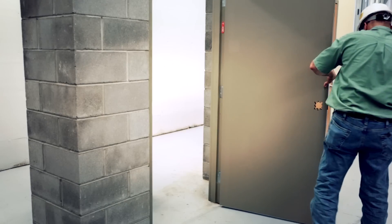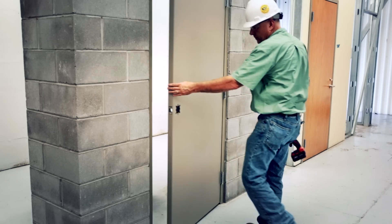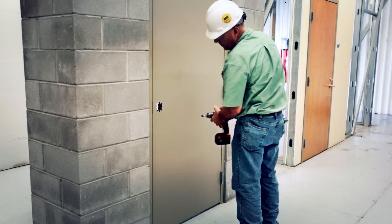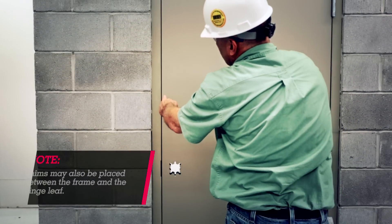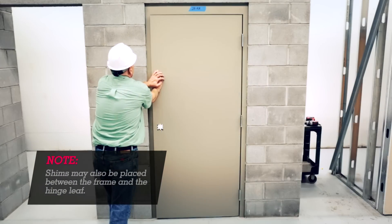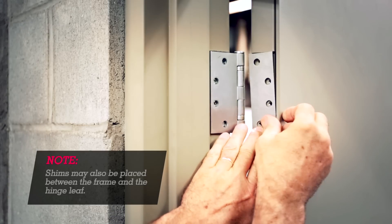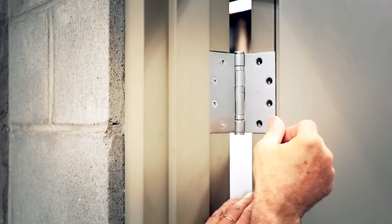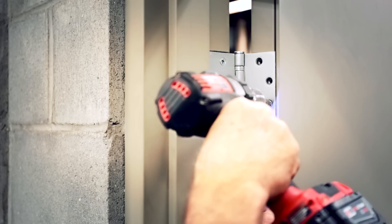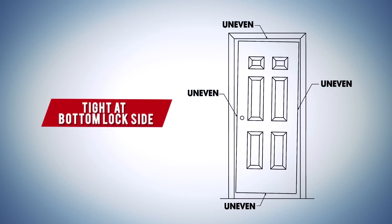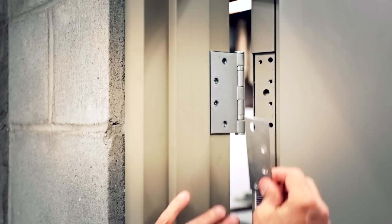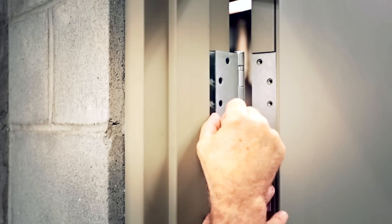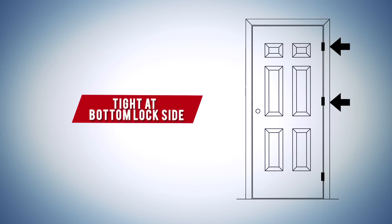Remove the support or wooden wedge from under the door. Close the door and check to see if the clearance issue has been resolved. If not, add additional shims as necessary to the same locations, making sure you maintain hinge screw thread engagement. When the door clearance is too tight at the bottom lock side of the opening, place the shims between the hinge leaf and door at the top and middle hinges. This will shift the lower half of the door downward.